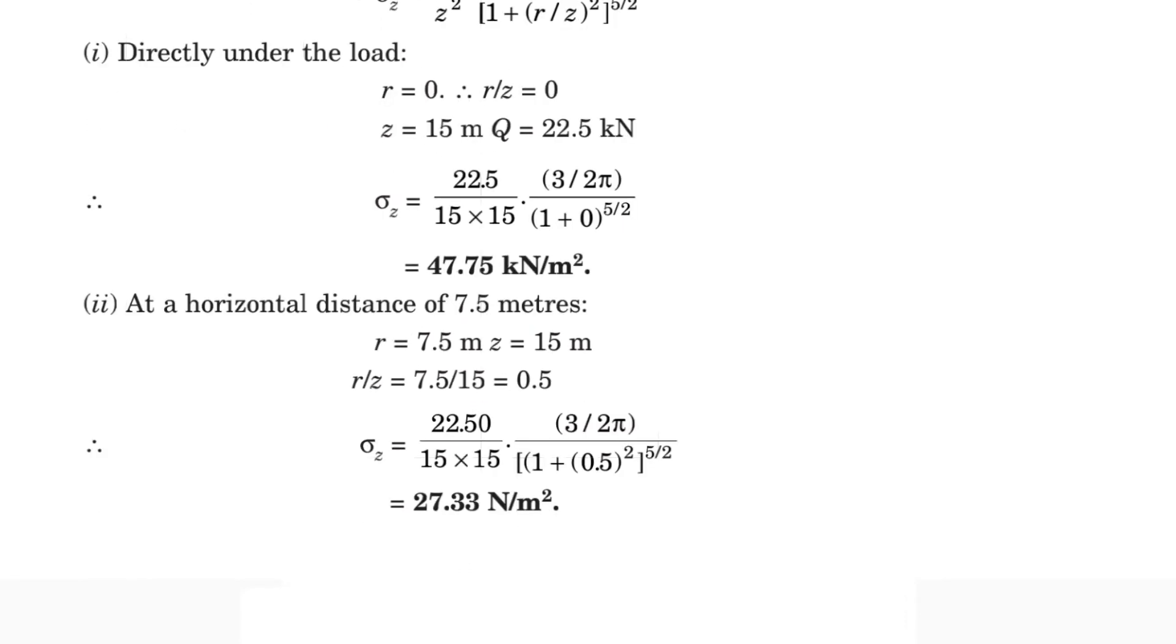For the second question, at a horizontal distance of 7.5 meters, r equals 7.5 meters and z equals 15 meters as given. So r by z equals 7.5 divided by 15 equals 0.5. Now we can substitute all the values.